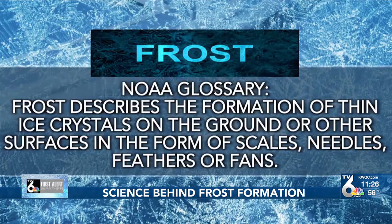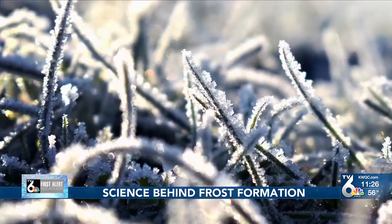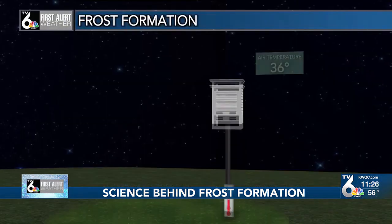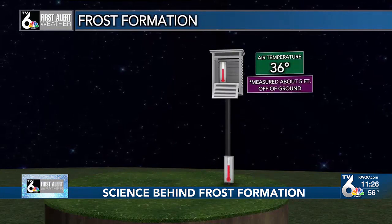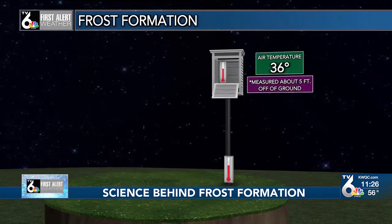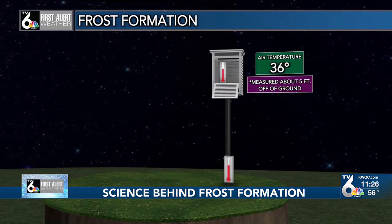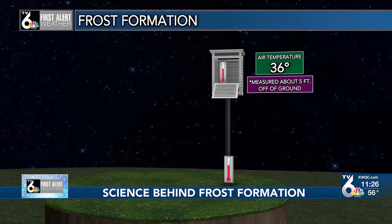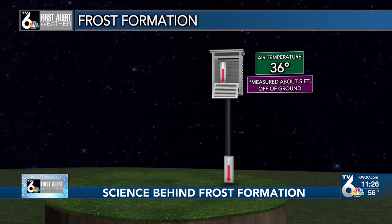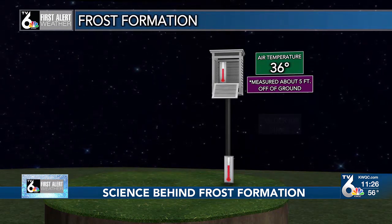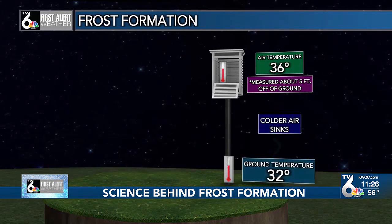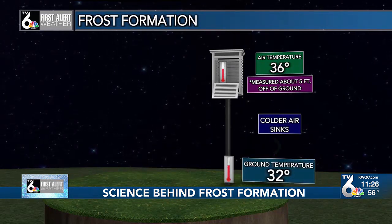Frost happens most often on grass and plants close to the ground. But how does it form? The air temperature doesn't necessarily have to be at or below the freezing mark. Frost generally forms on a night with clear skies and light winds. The temperature you see on the weather map or on the QC weather app is actually measured several feet above the ground. Remember, cold air sinks, so a lot of the time the ground temperature can be several degrees colder.